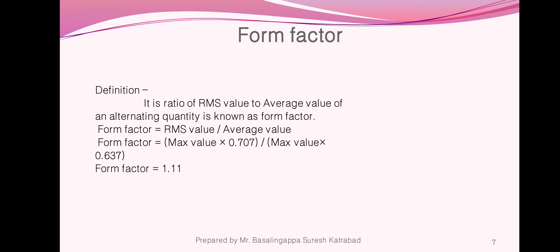Next, form factor. It is defined as the ratio of RMS value to the average value of an alternating quantity. Mathematically, form factor equals RMS value divided by average value. Substituting, RMS value is V_MAX multiplied by 0.707, and average value is V_MAX multiplied by 0.637. The maximum values cancel, giving 0.707 divided by 0.637, which equals 1.11. So form factor is 1.11. Form factor is used to convert RMS value into average value or average value into RMS value.